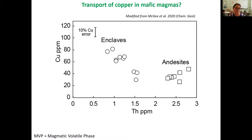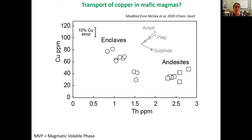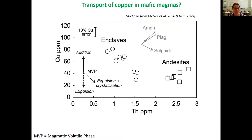We can look further into this by examining the elemental data — copper in PPM on the y-axis, with thorium in PPM on the x-axis as a measure of magmatic evolution, as it is an incompatible element. We can see that the enclaves and the andesites have very different behaviour: in the enclaves copper is acting as a compatible element, whereas in the andesites it's acting as an incompatible element. The variation in the andesites is probably due to crystal fractionation, such as amphibole and plagioclase, which are important phenocrysts in these rocks. The enclaves could be experiencing sulphide crystallisation, but it's more likely that they are experiencing some sort of interaction with a magmatic volatile phase, which copper would also be compatible in.